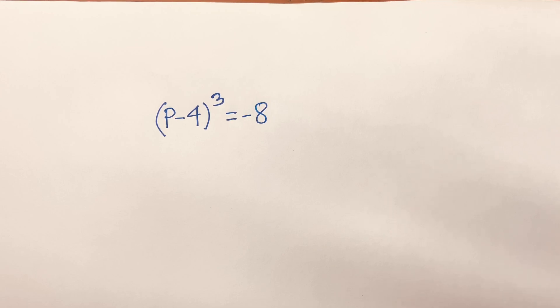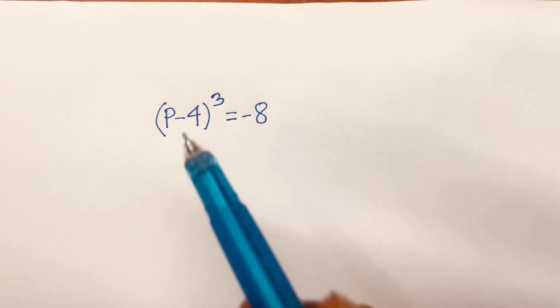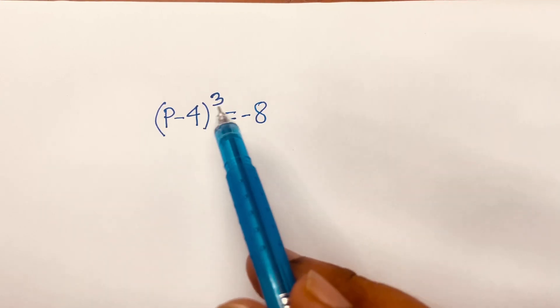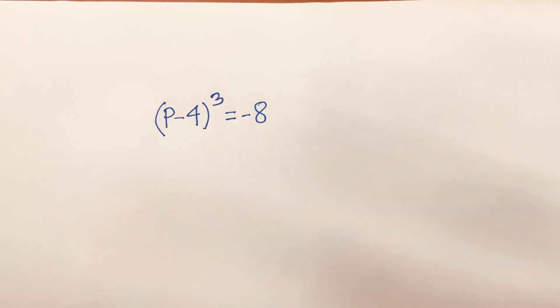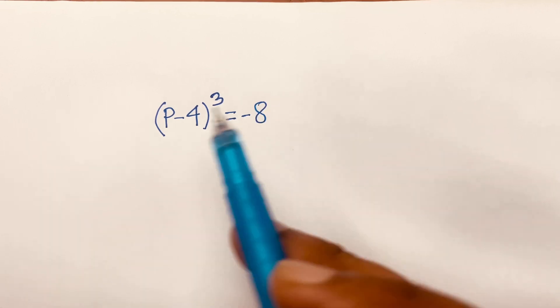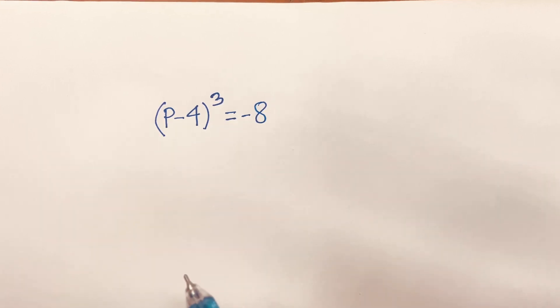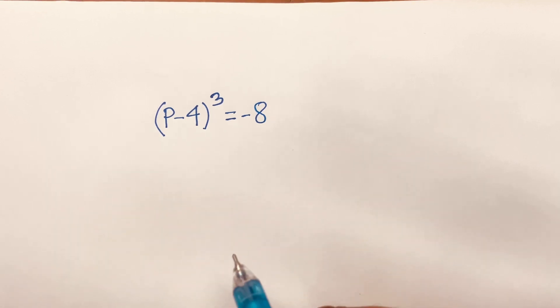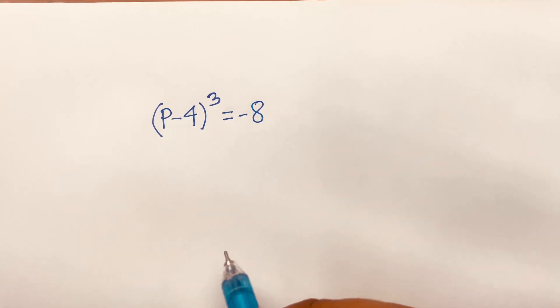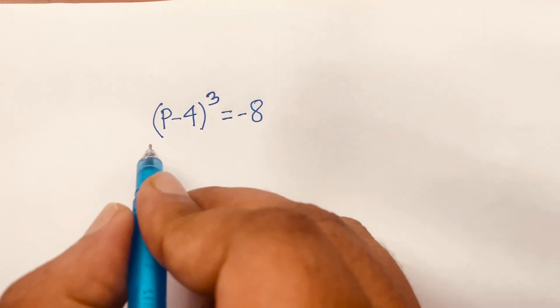Hello everyone. We are going to solve this Math Olympiad equation: (p minus 4) to the power 3 is equal to minus 8. We need to find out what is the value of p in this equation.